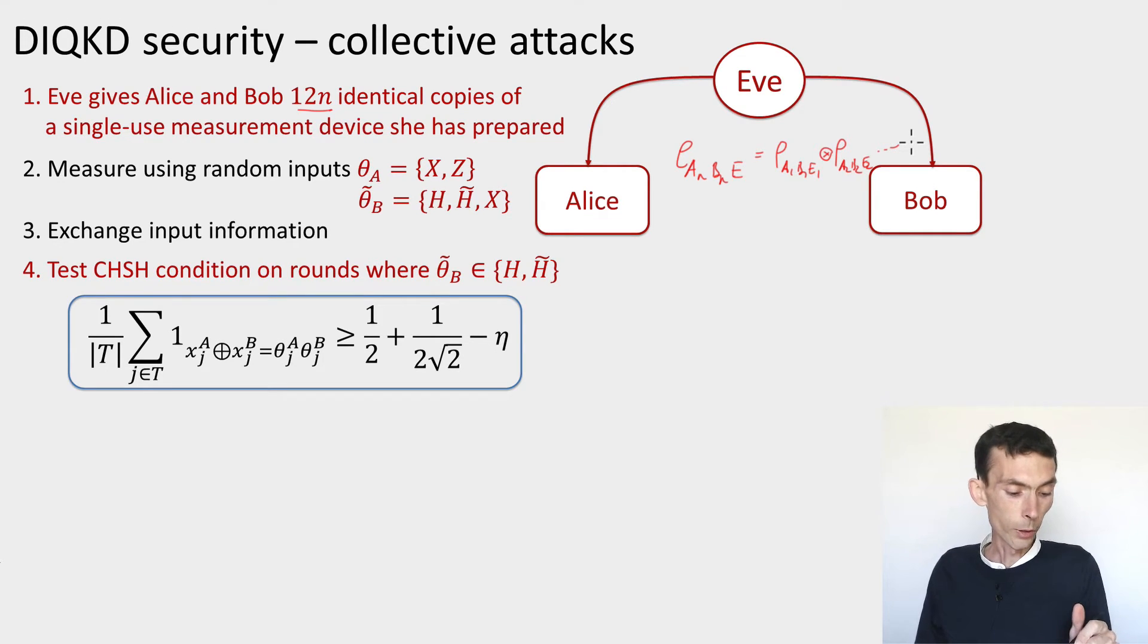There's going to be two tests that the parties perform. The first, we've already seen, it's the CHSH test. They take these test rounds t, and there's going to be approximately 4n out of the 6n test rounds where the inputs are x or z for Alice and h or h_tilde for Bob. When restricting themselves to these 4n rounds, they evaluate the fraction of these rounds in which the devices they used produce outputs that satisfy the CHSH condition. They check that this fraction is at least the optimum that we could expect from quantum devices minus a little bit of tolerance eta.